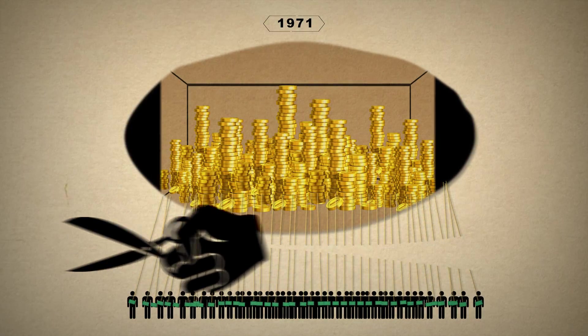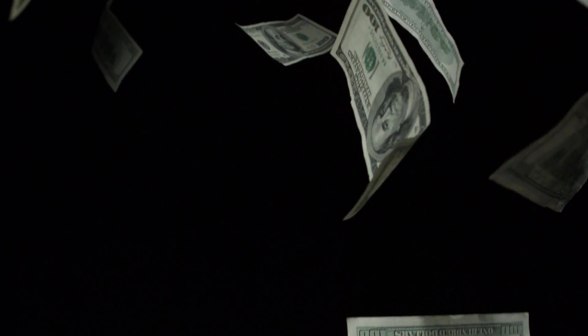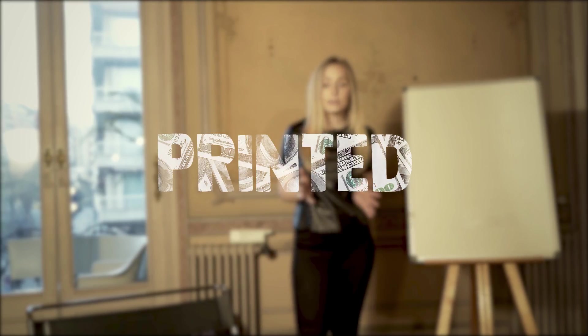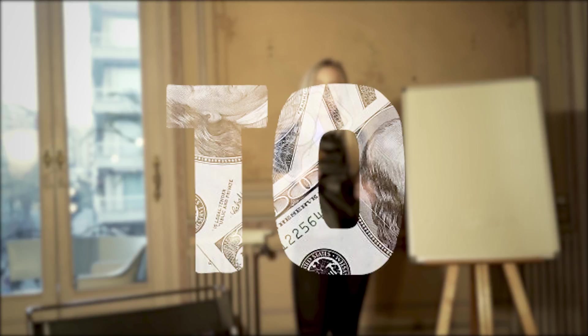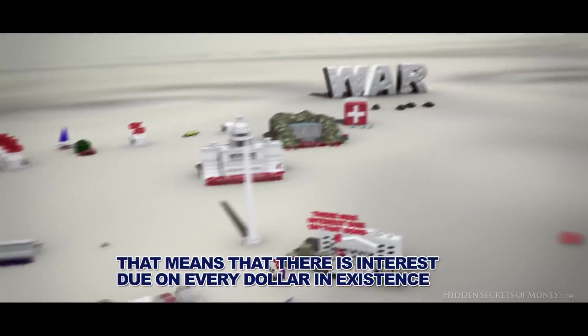They decided to cut the link between paper and gold, leaving dollar holders with a piece of paper. Every dollar in existence printed by the central bank comes with debt attached to it. Let me use an example from the documentary 'Hidden Secrets of Money.'